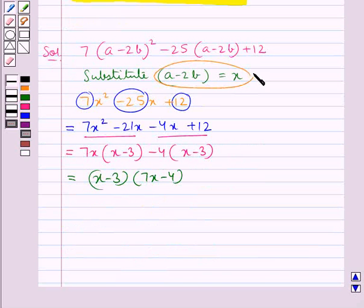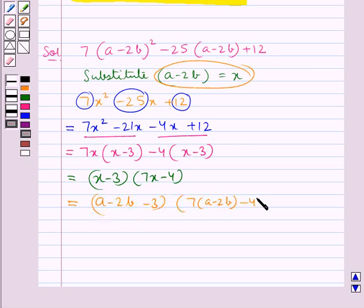Now we substitute x = (a-2b) back in. This gives us (a-2b-3)(7(a-2b)-4), which equals (a-2b-3)(7a-14b-4).